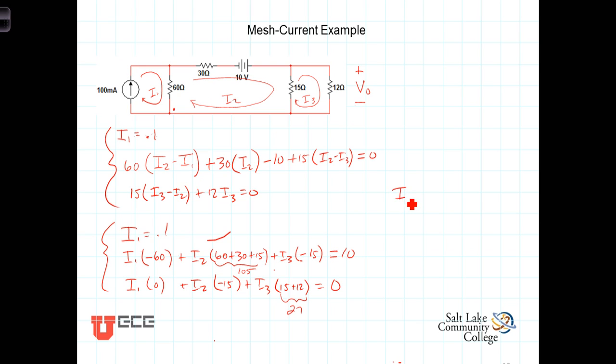And when we do that, we find that i1 is equal to, we already knew what i1 was, 100 milliamps or 0.1 amps. i2 is equal to 0.1655 amps, and i3 is equal to 0.092 amps.